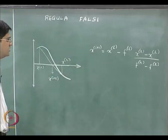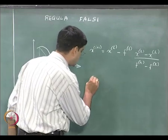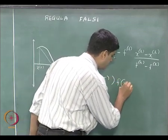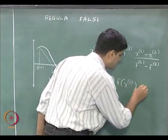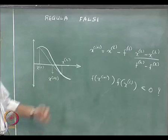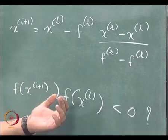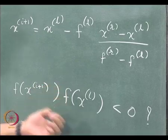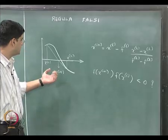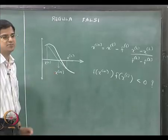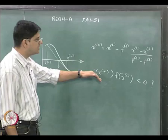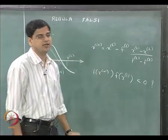In Regula Falsi, the next step was we checked whether f(x_i+1) multiplied by f(x_l) is less than zero. If yes, we replaced x_l with x_r. If no, we replaced x_l with x_i+1. That was our Regula Falsi method and we kept repeating that until x_i+1 was close enough to x_l.